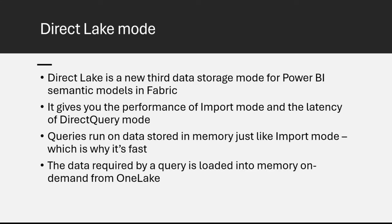You can see the on-demand data loading happening. There is a DMV you can run that can tell you which columns have been loaded into memory and how hot they are—how often they are used. Here is a DMV called Discover Storage Table Segments. I'm going to run this on a semantic model that I have not used. Let me first refresh this—it should be nice and quick. I'm going to go to Refresh Demo and do a refresh.